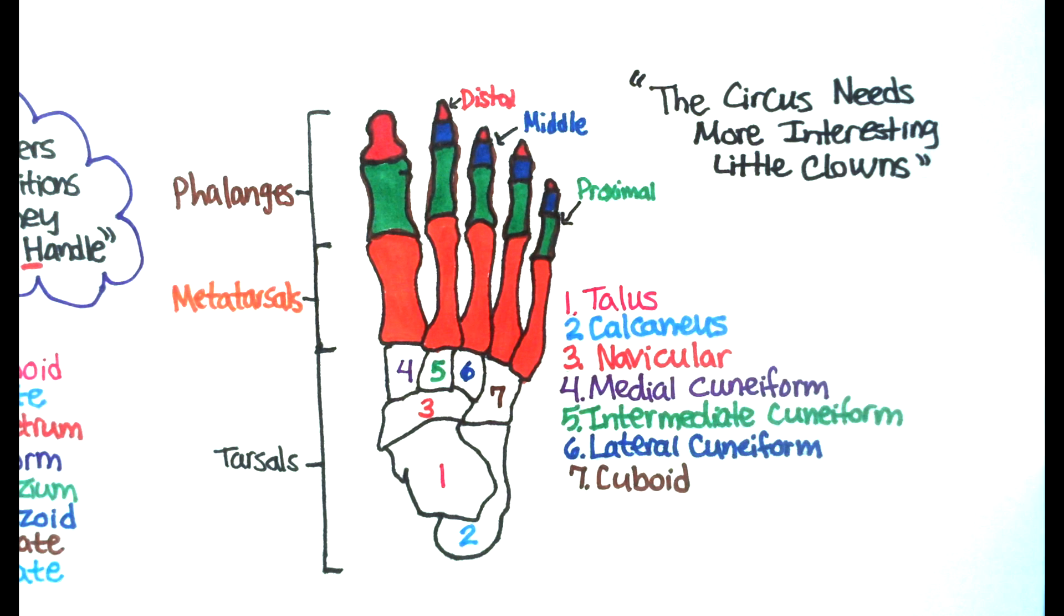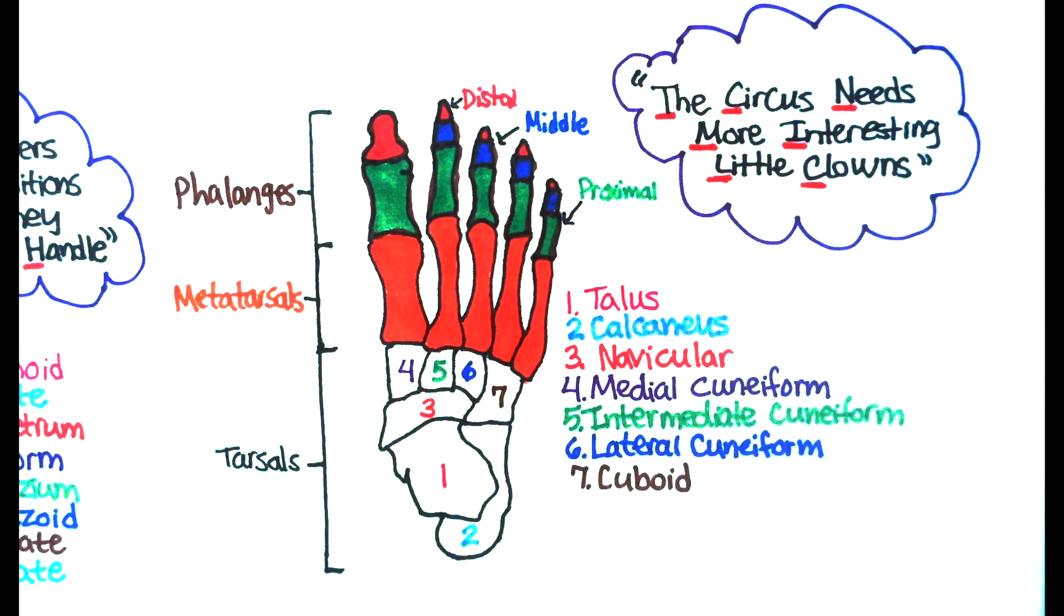The circus needs more interesting little clowns to remember these bones. So, T for talus, C for calcaneus, N for navicular, M for medial cuneiform, I for intermediate cuneiform, L for lateral cuneiform, and C for cuboid.